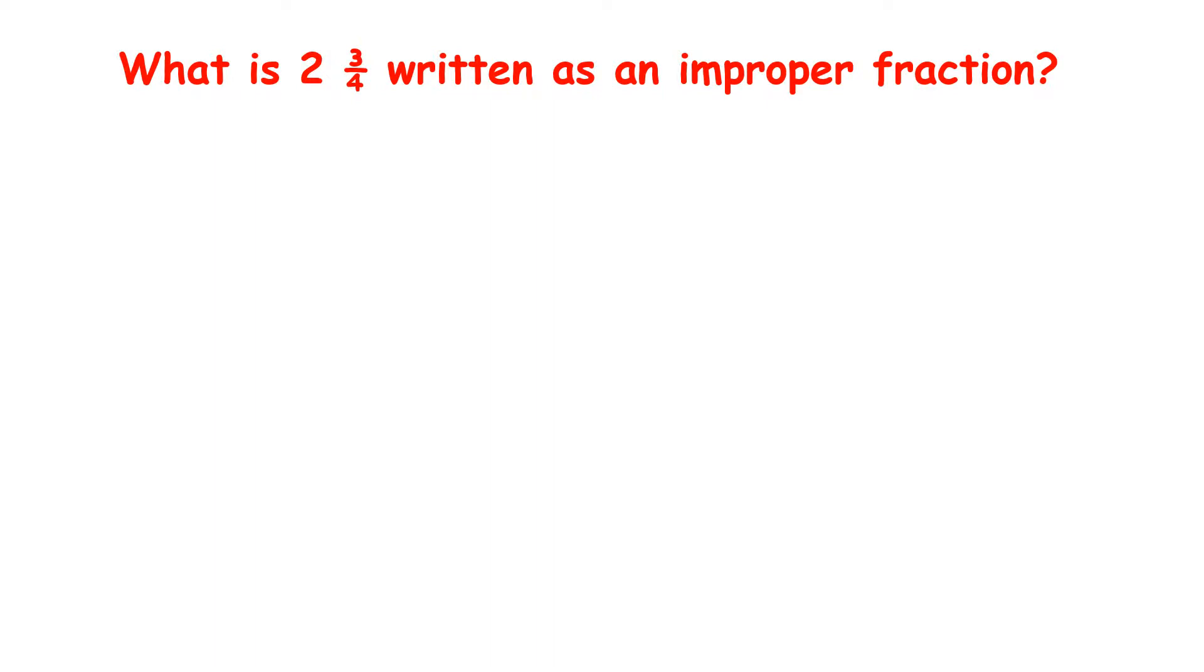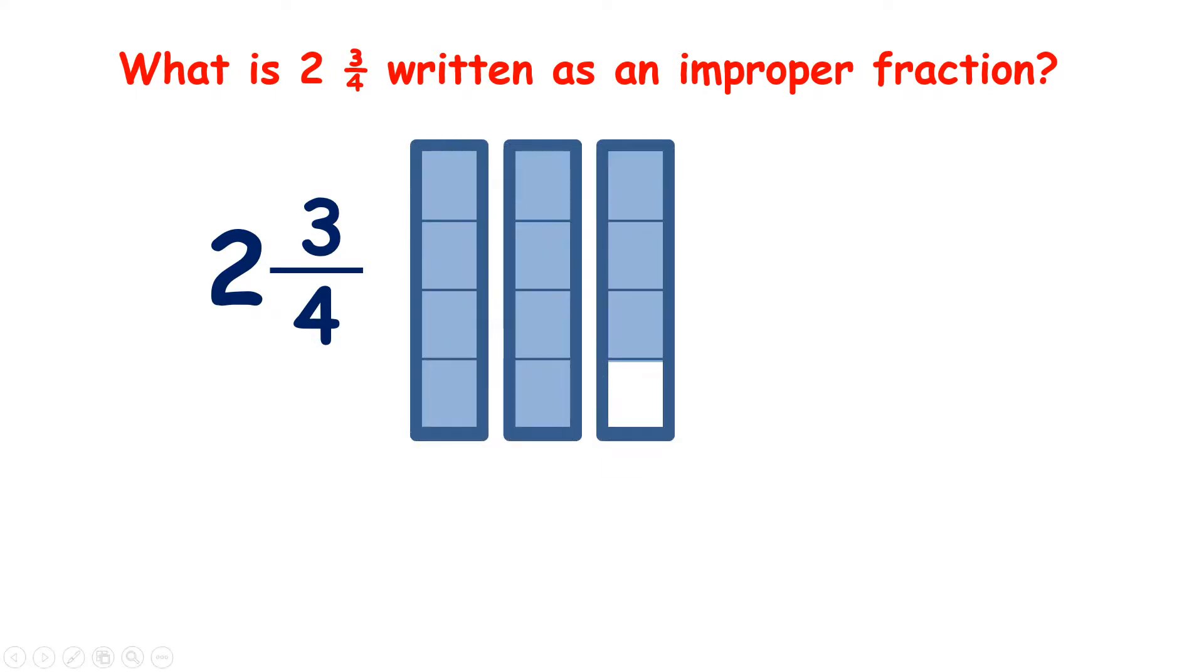What is 2 and 3 quarters written as an improper fraction? Well, if we think about the mixed number 2 and 3 quarters, what it means is that we've got two wholes, so in this case two whole bars, and three quarters of another one.